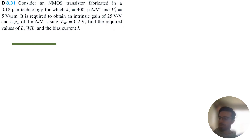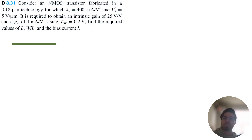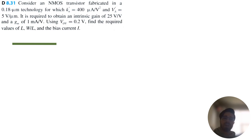Let's solve problem 8.31 for Microelectronics Circuits 8th edition by Sedra Smith. Consider an NMOS transistor fabricated in a 0.18 micrometer technology for which Kn' equals 400 microamps per volt squared and VA' equals 5 volts per micrometer. It is required to obtain an intrinsic gain of 25 volts per volt and a gm of 1 milliamp per volt. Using V overdrive equals 0.2 volts, we want to find the length, the width divided by length, and the bias current I.